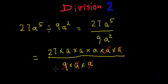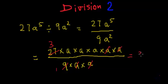9 ones are 9, and 9 threes are 27. So how can we write this? This can be written as: we have one constant which is 3. Then we have variables — all of them are a, a, a, a. Three times they are in multiplication, so it can be written as a cube.